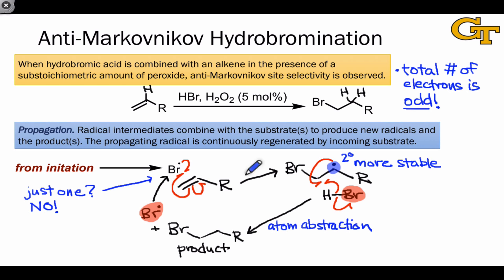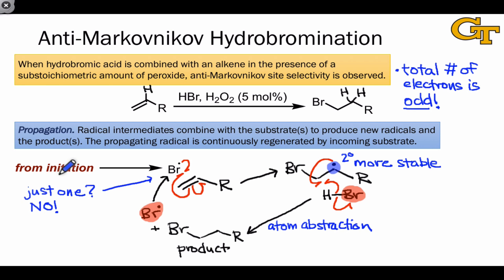In fact, the radical intermediates of propagation are susceptible to radical-radical coupling, which destroys radicals through the creation of even-electron species. The problem is termination. Any step that takes one of these odd-electron intermediates out of the cycle of propagation through radical-radical coupling is going to require more initiator to create more propagating radical through homolytic cleavage. This is why we need more than just a single molecule of initiator to promote this reactivity. In the next video, we'll look at termination in detail.